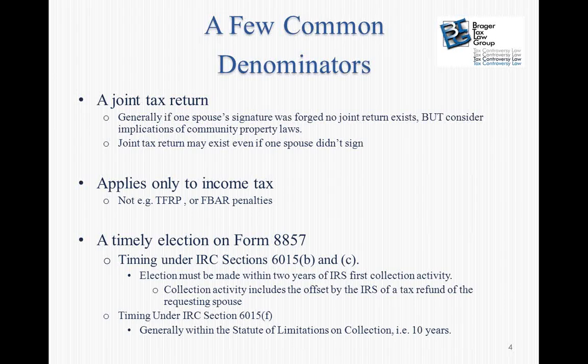Collection activity does not include simply sending out various collection notices. It does, however, include the offset by the IRS of a tax refund belonging to the requesting spouse. This is problematic because sometimes people have their refunds withheld, applied to a prior tax liability — the refund is small, the person doesn't attend to it, and suddenly two years have gone by and it's too late to file under 6015(b) or (c).